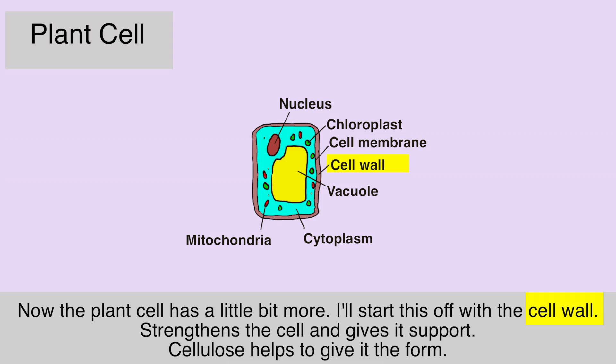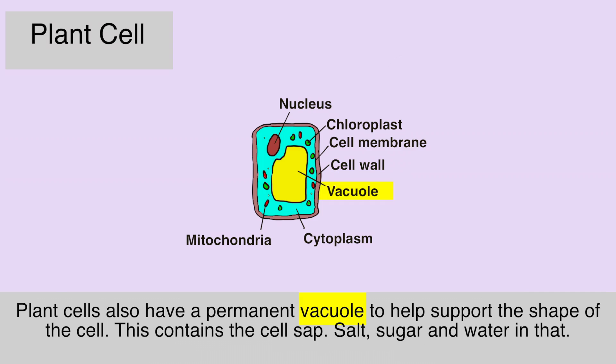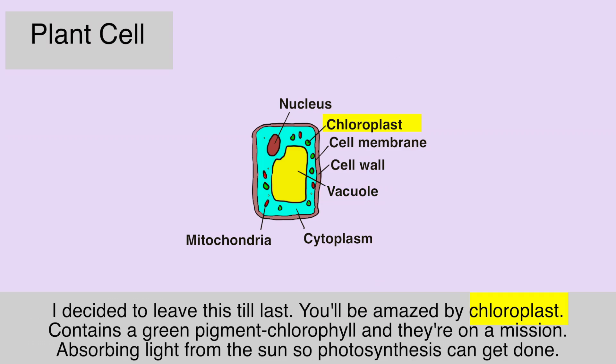Plant cells also have a permanent vacuole to help support the shape of the cell. This contains the cell sap — salt, sugar, and water.